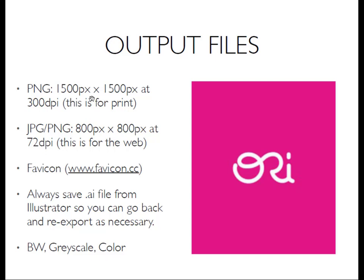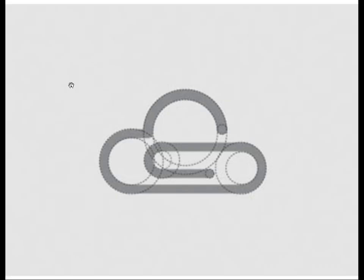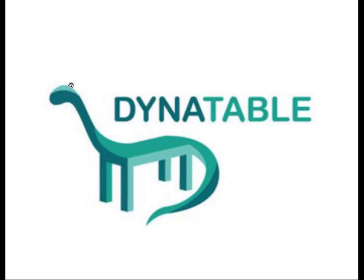For output files, PNG format should be 1500 by 1500 pixels or 300 DPI — great for print. We also have JPEG format. We'll output our files today as both, but these are not vector images. Ideally you'll have both vector and raster versions of your file, because a lot of people can't open an Adobe Illustrator file, which will be your main vector source. PDFs can be vector files, but not everyone can open them either. It's good to have both raster and vector versions of your files.